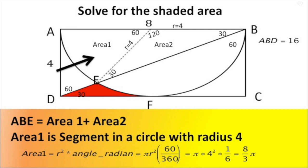Next, we need to find the area ABE, which is part of a circle. We have the origin here and the radius of the circle equals four. This area consists of two parts: area one and area two. Area one is a sector with an angle of 60°, because the radii are in the same triangle with the same angles, making the inner angle 120°, and therefore the other angle is 60°.